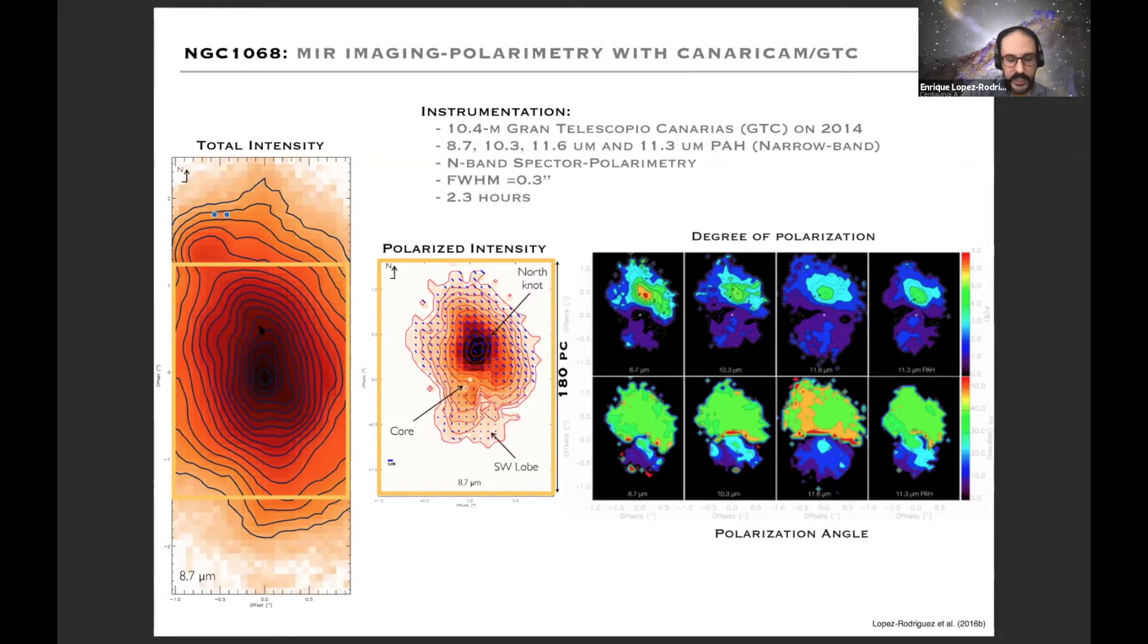When you go to the polarized intensity, it's like you have a coronography. In the center you have an unpolarized source and a very highly polarized area in the north.